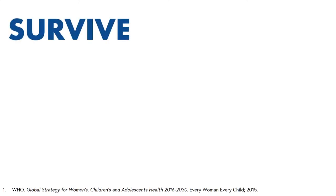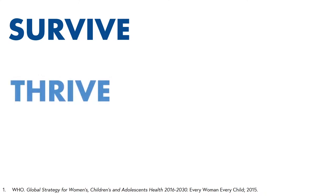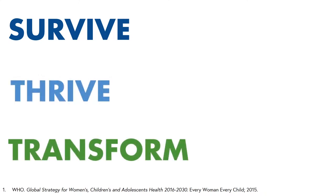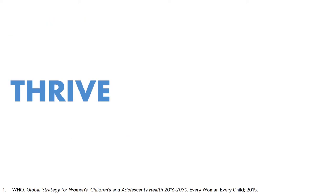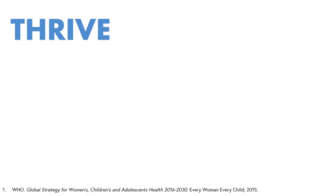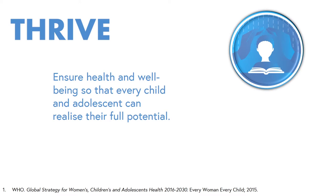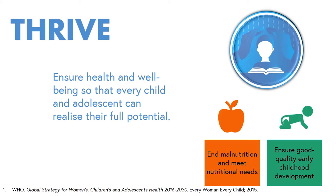Child health is about so much more than survival. The World Health Organisation's Global Strategy for Women's, Children's and Adolescent Health for 2016 to 2030 recognises this and describes the agenda as survive, thrive and transform. Thriving means that every child and adolescent can reach their full potential, resulting in enormous social, demographic and economic benefits. Two key strategic areas on the road to success will be nutrition — ending malnutrition and meeting broader nutritional needs — and ensuring good quality early childhood development. We will touch on these themes more throughout this week.